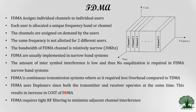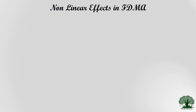FDMA requires tight RF filtering to minimize adjacent channel interference. The guard band between Channel 1 and Channel 2 must be properly allocated; without proper separation, interference will occur between adjacent channels. This demands stringent RF filter design that works accurately to eliminate interference between adjacent channels. These are the key pros and cons of FDMA systems.